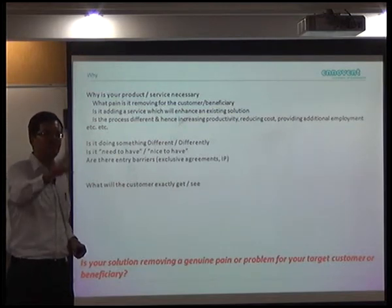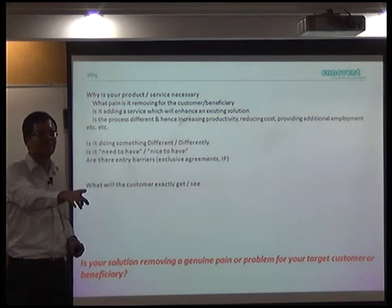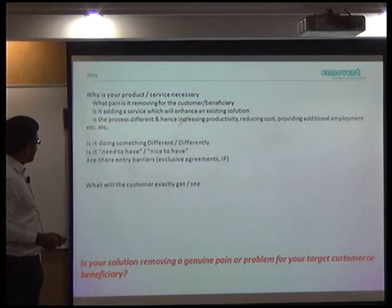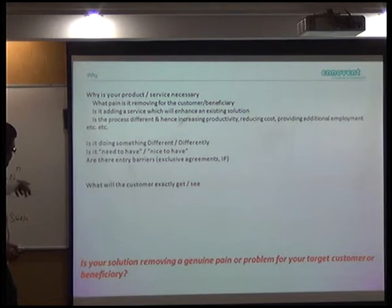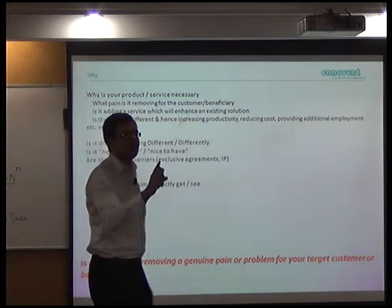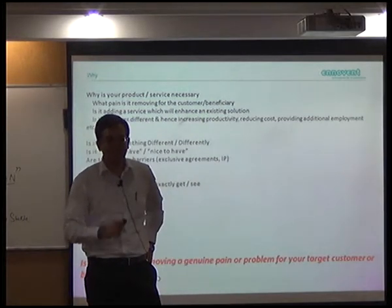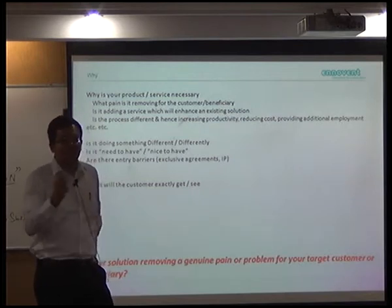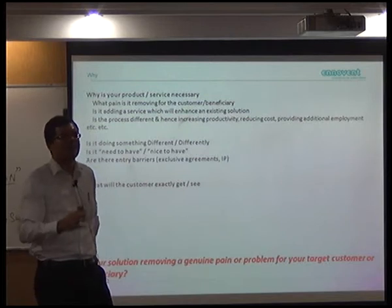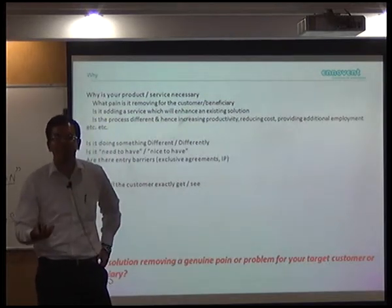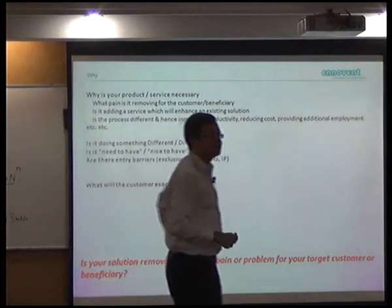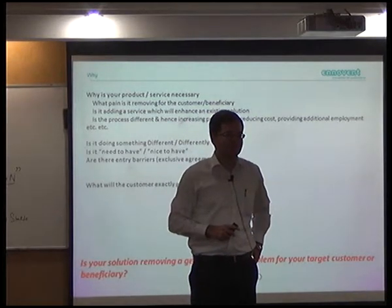If you invent something you can get a patent, but patents are not the only entry barrier. Suppose I'm selling to the railways and have a 10-year exclusive supply agreement — that becomes my entry barrier, because anyone else who wants to supply to them cannot do so. So you have to figure out how to build more stickiness with your customer, moving toward need-to-have. Is your solution removing a genuine pain or problem for your target customer? If not, you will have a hard time getting your venture to success.